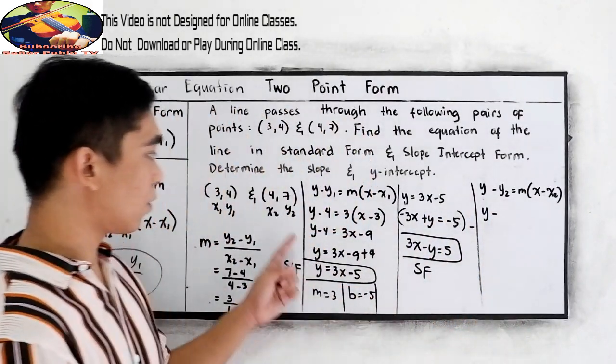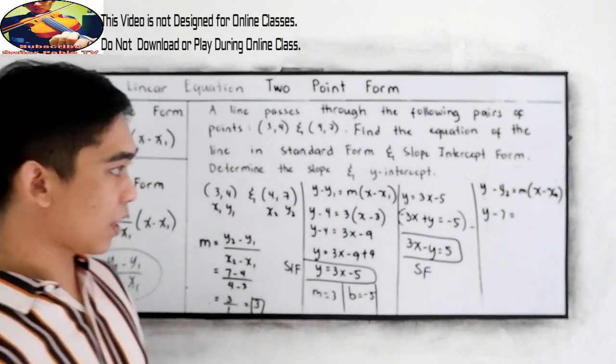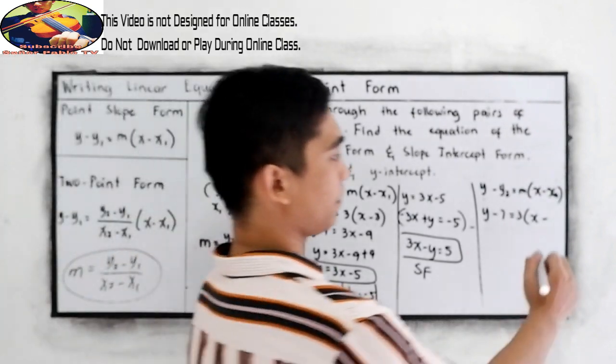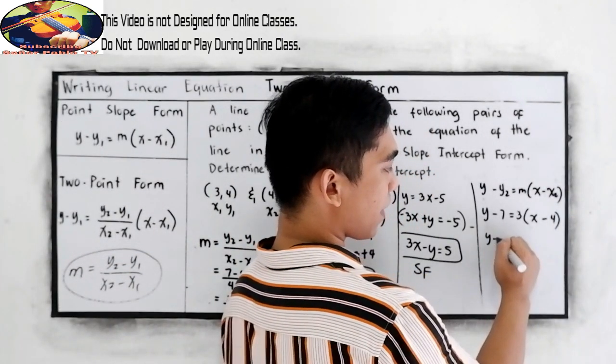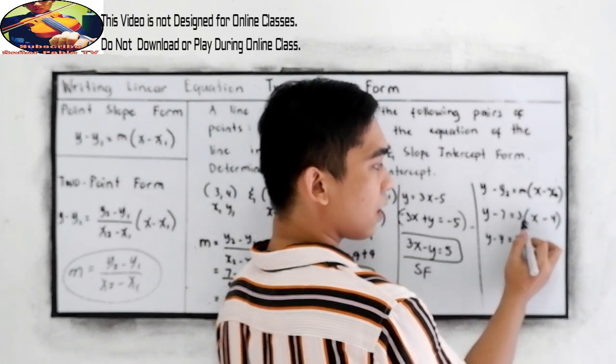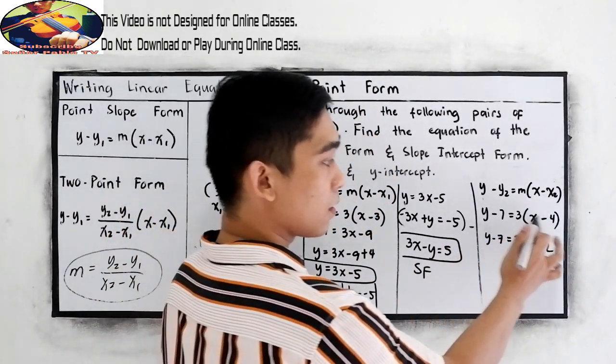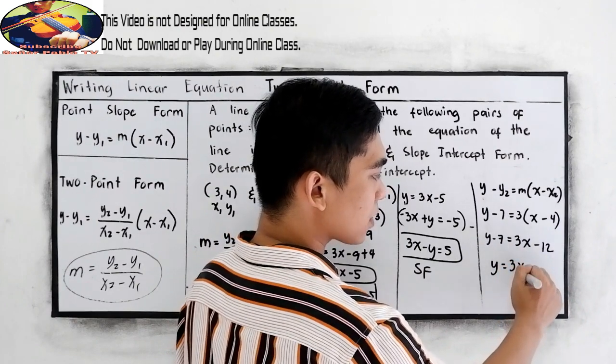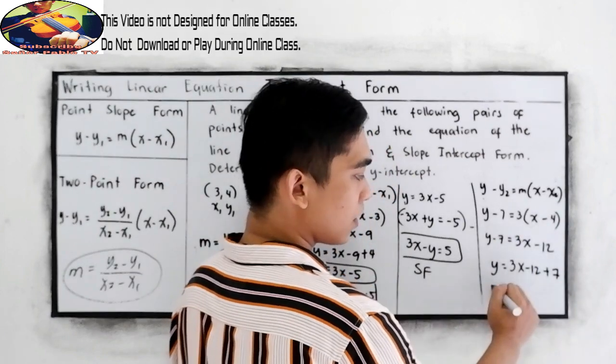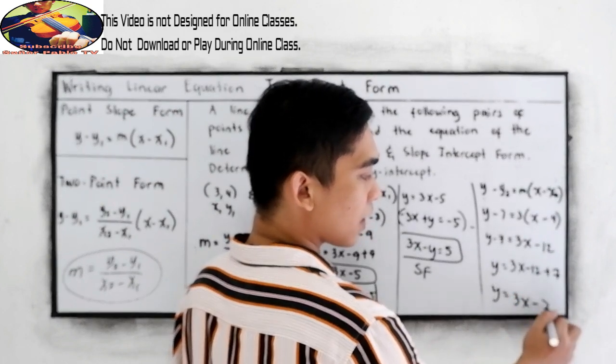So, y minus y sub 2 is 7 is equal to our m is 3 times x minus x sub 2 is 4. So, y minus 7 is equal to 3 times x, that is 3x, 3 times negative 4, negative 12. Now, y is equal to 3x minus 12, move to the right, combine like terms, that will become positive 7. So, y is equal to 3x minus 12 plus 7, negative 5.